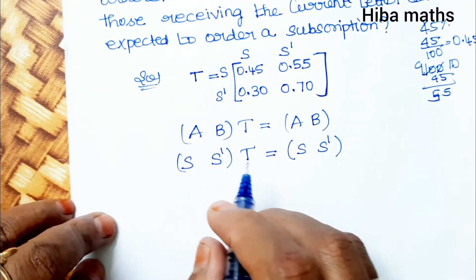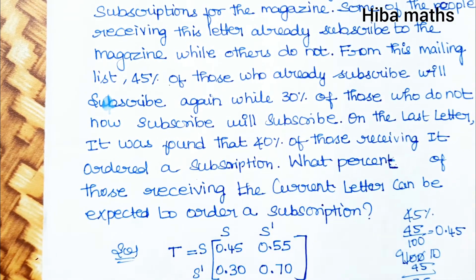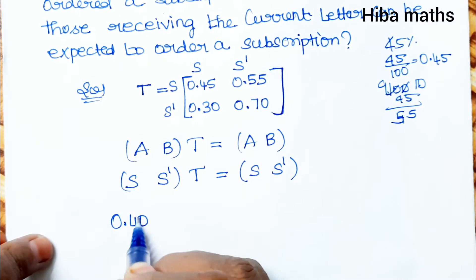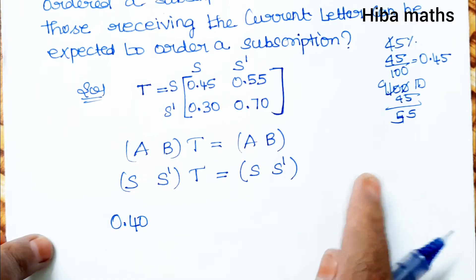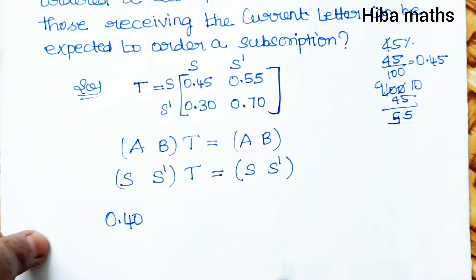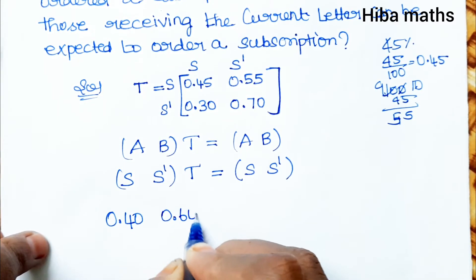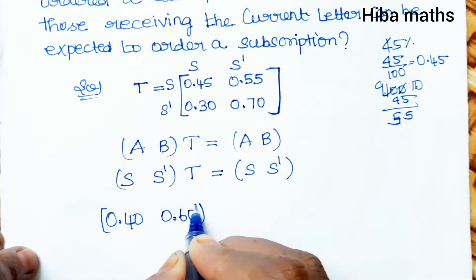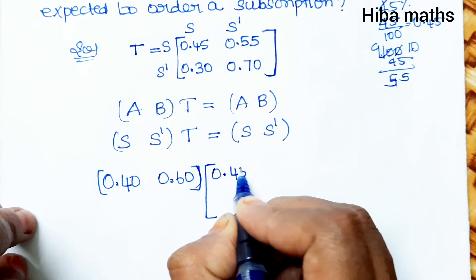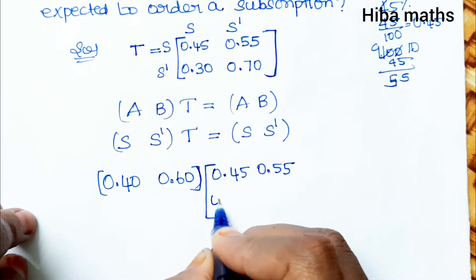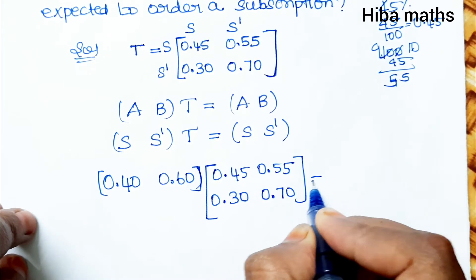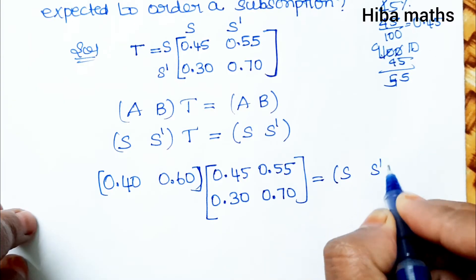S and S' represent subscribed and not subscribed states. The last letter had 40% subscribe, so that is 0.40, and therefore 0.60 did not. The transition matrix T is: 0.45, 0.55, 0.30, 0.70.